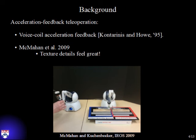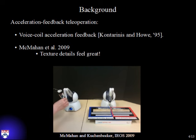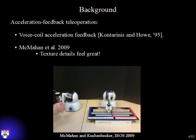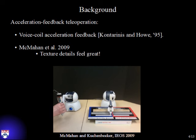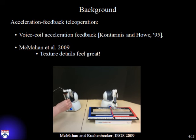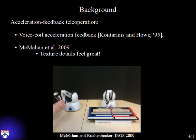An alternative field of haptics research is acceleration feedback teleoperation. Contraries and Howe in 1995 put an accelerometer on a slave haptic device and fed that signal to a voice coil actuator on a master haptic device, allowing the user to feel any contacts and transient information when the slave hit objects in the real world. We explored systems like this in our own laboratory, and in 2009 demonstrated a teleoperation system at the World Haptic Symposium that won the Best Demonstration Award. Many people who feel this demonstration describe the textures as amazingly real and compelling.